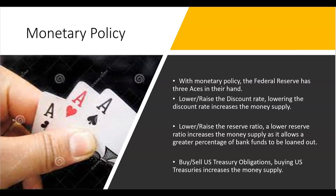Let's start by reviewing what we know about monetary policy. With monetary policy, the Federal Reserve has three aces in their hand. They could lower or raise the discount rate — that's the rate the Federal Reserve charges member banks for overnight lending. Lowering the discount rate increases the money supply and is seen as expanding the economy.